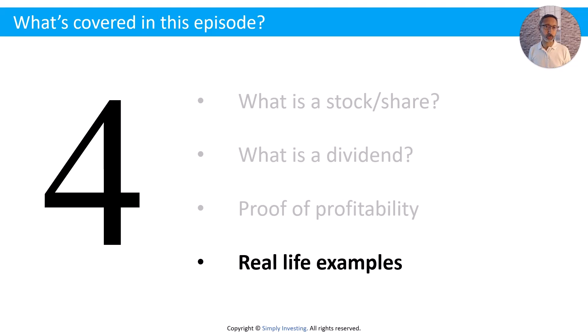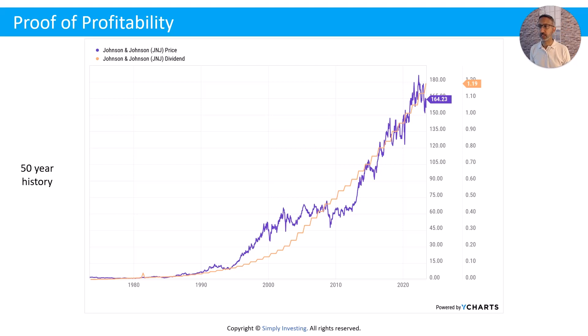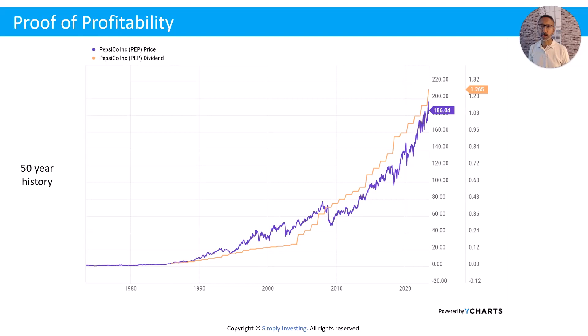Now let's look at some real-life examples. First, Johnson & Johnson over a 50-year history. The stock price in blue goes up and down — we see drops of $5, $10, even $15 a share. But the orange line, the dividend, keeps going up every single year. As the dividend grows in the long term, so does the share price — it starts to creep up. This is all good news for dividend investors.